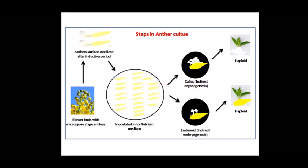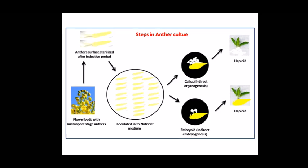Let's see the steps involved in anther culture in pictorial description. We collect immature flower buds, surface sterilize the anthers or the entire flower buds, carefully excise the anthers, and inoculate them in the culture medium. According to the nature of the plant or genotype, it may undergo one of two processes: the anthers produce callus and from the callus organogenesis takes place, producing haploid plants; or the anthers produce an embryoid-like structure from which haploid plants are produced.